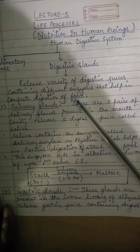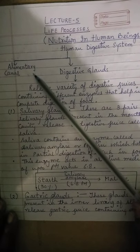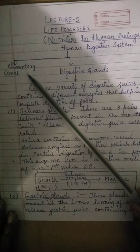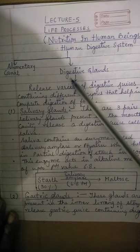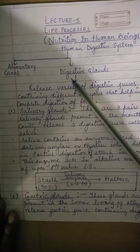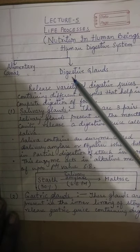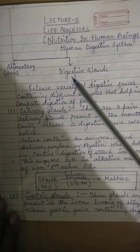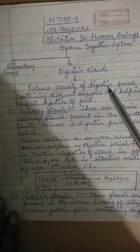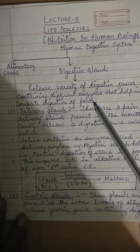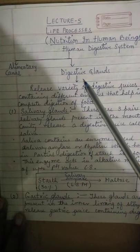Good morning students. In the last video we had discussed about the alimentary canal, its structure and its function. The alimentary canal helps in the process of digestion in human beings. Now in this video we will be discussing about digestive glands, which also play a very important role in digestion because these glands produce a variety of digestive juices consisting of digestive enzymes.